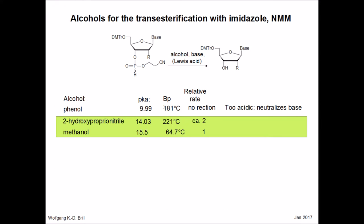The acceptor alcohol also has a profound impact on the transesterification reaction. Phenol inhibits the reaction because it neutralizes the base catalyst. In turn, 2-hydroxypropionitrile gives a more rapid reaction than methanol because it is more acidic and therefore exists in a larger percentage as alkoxide, a nucleophile particularly suited to attack phosphorus species.